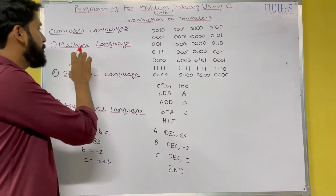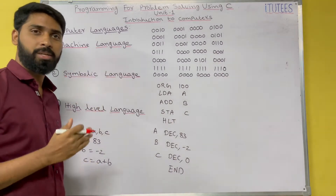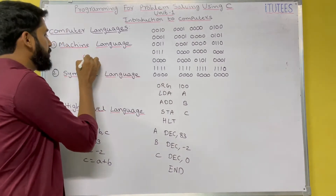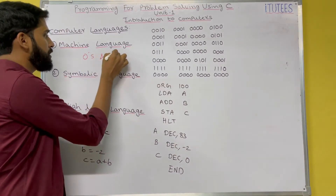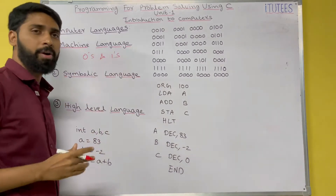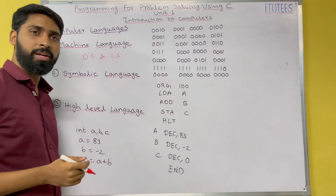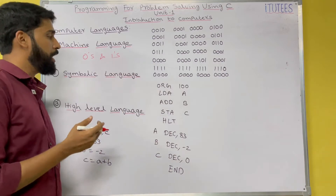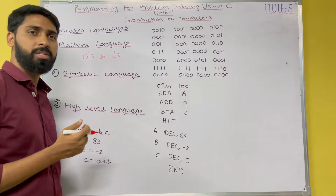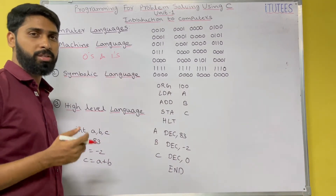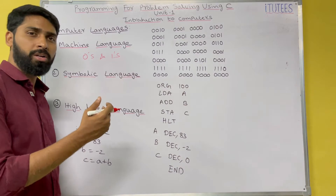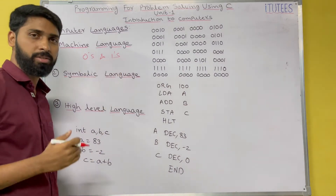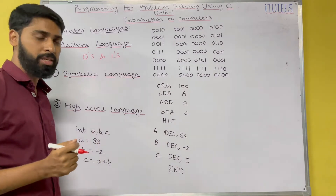The first one is machine language. Machine language is nothing but it consists of zeros and ones. Because in olden days, computers were using transistors — on and off switches. These have only two states: on or off. Those we call as zeros and ones. So on means one, off means zero.